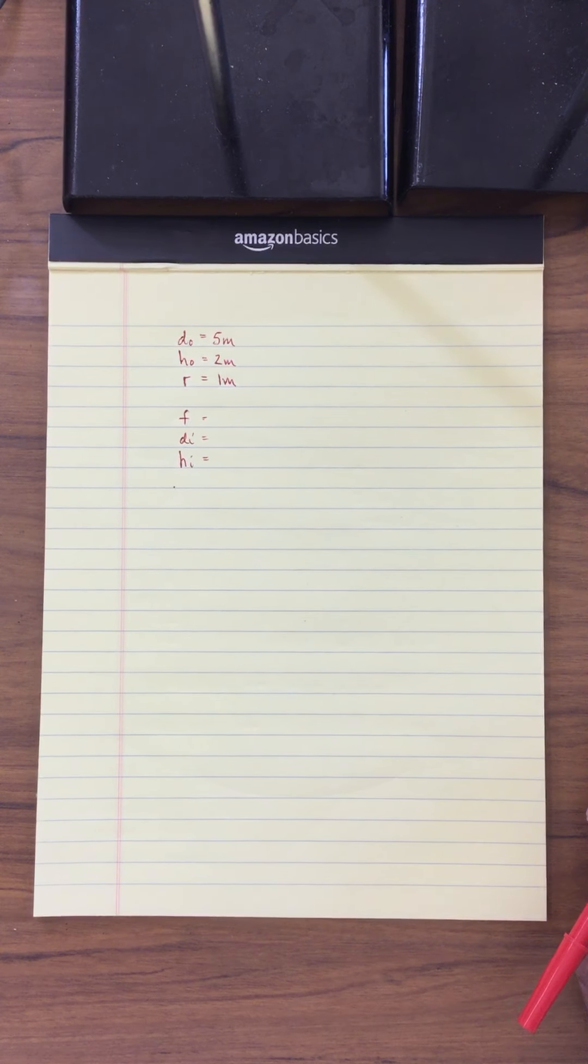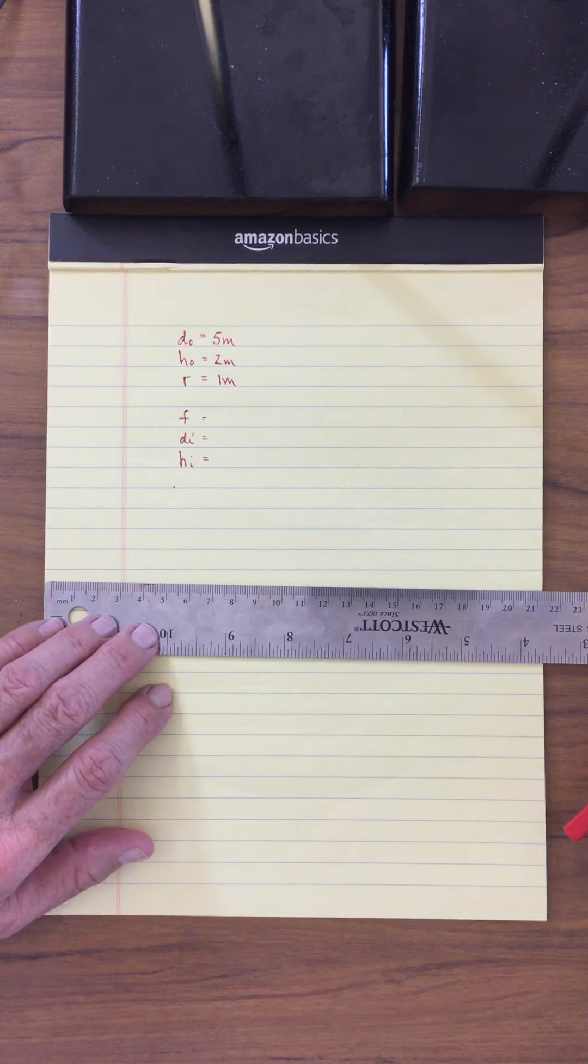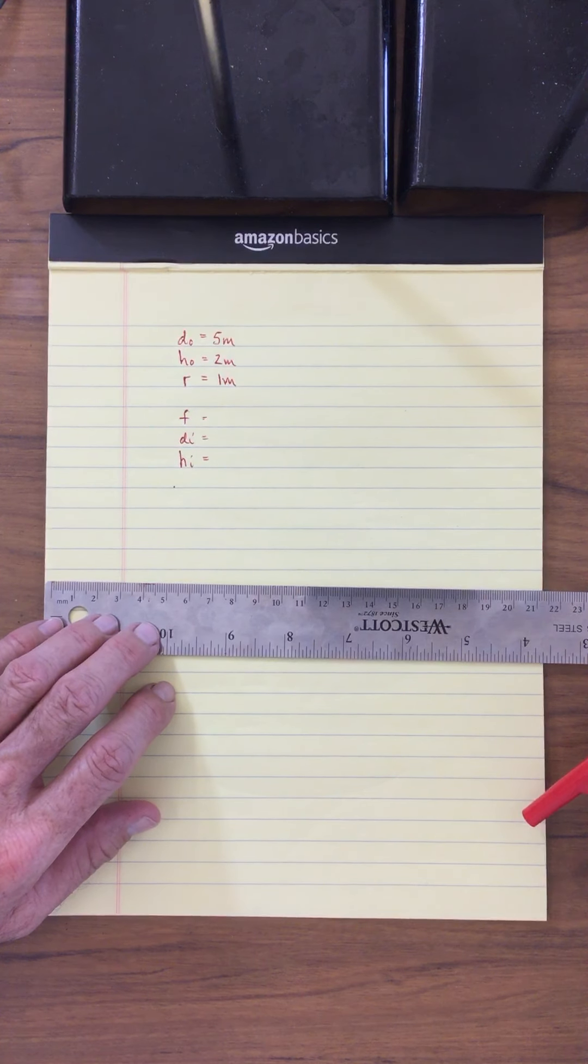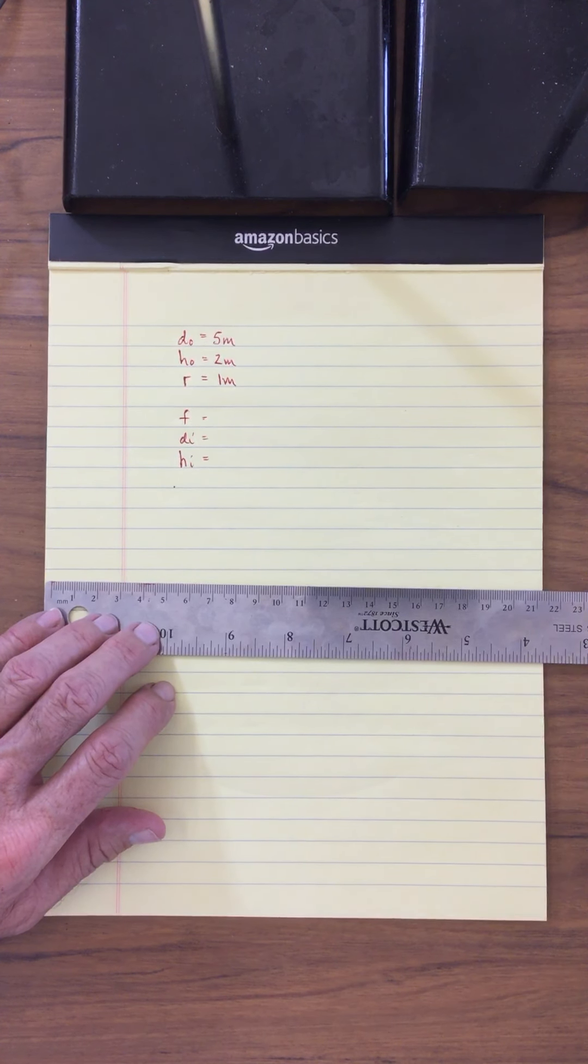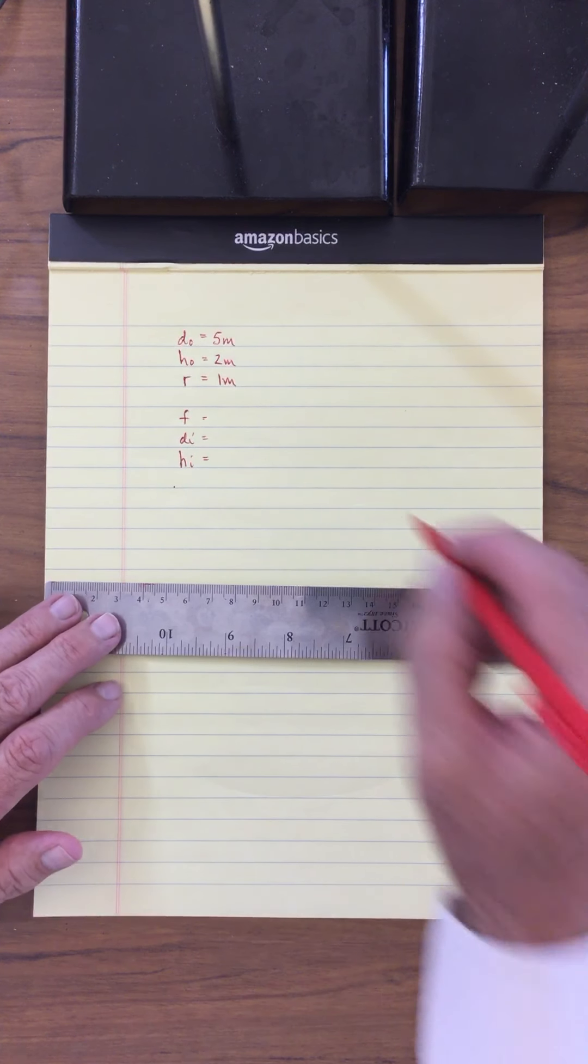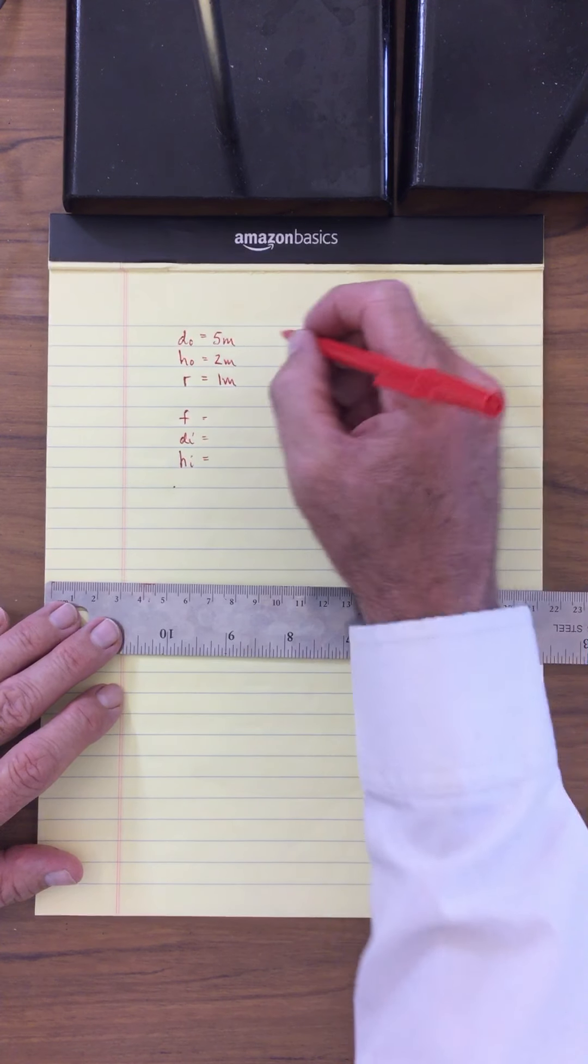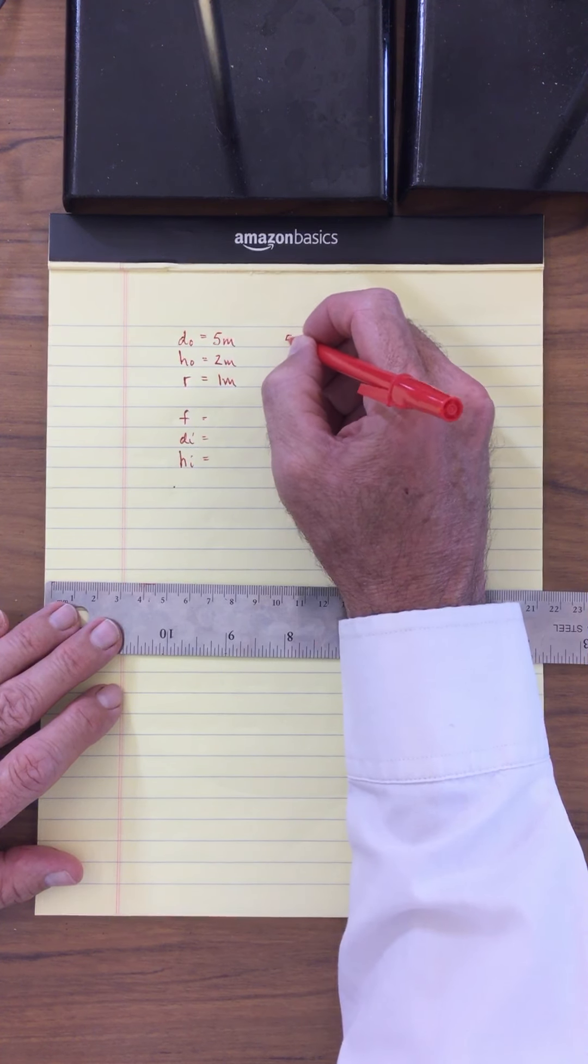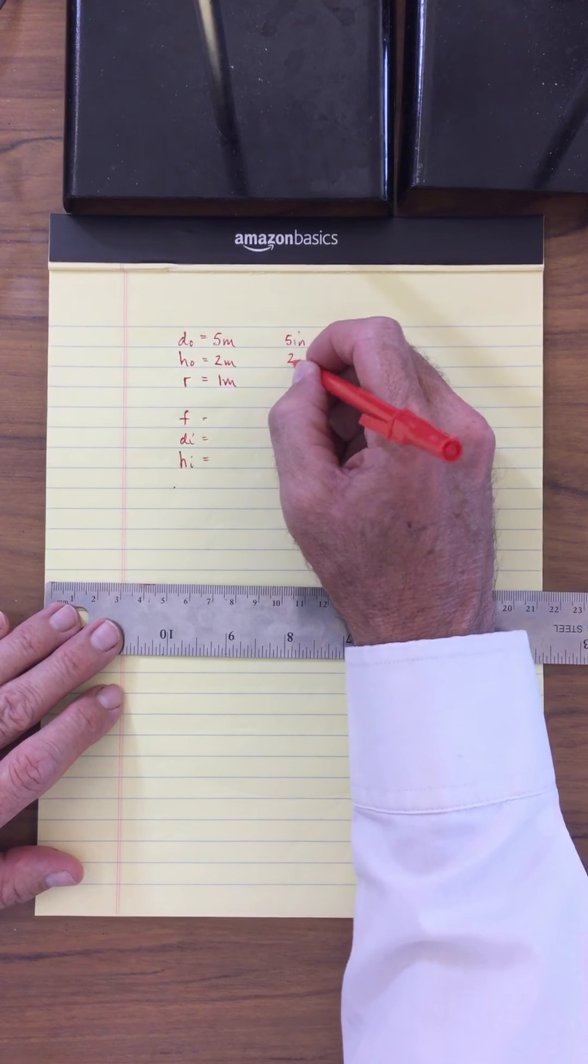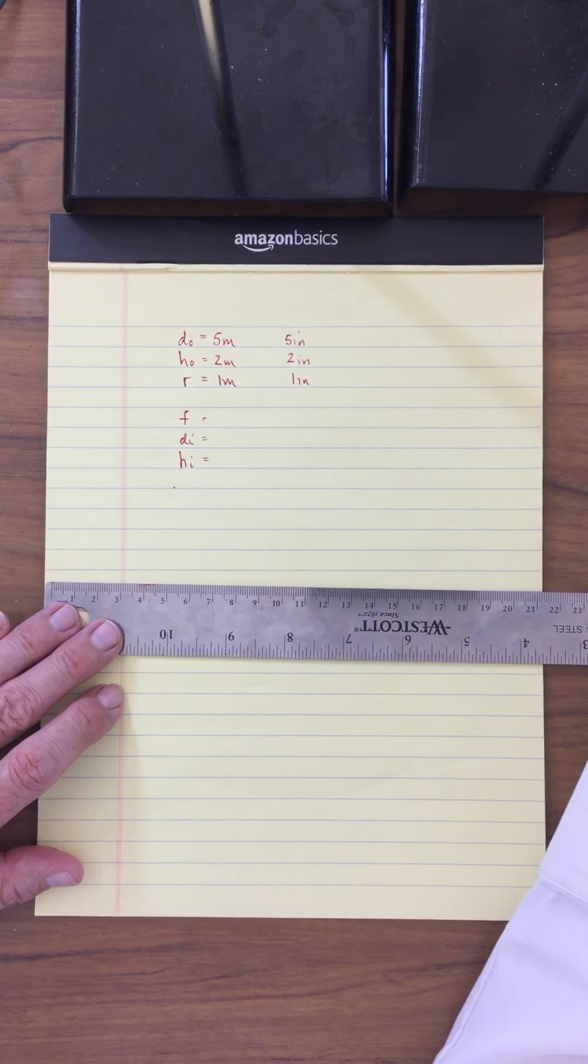Let's first go ahead and make this to scale. We can't draw 5 meters on this and drawing this as 5 centimeters might be a little bit too small. So I'm going to convert these meters into inches. So on my scale it's going to be 5 inches, 2 inches, and 1 inch.